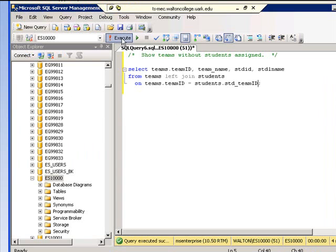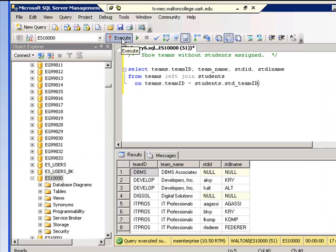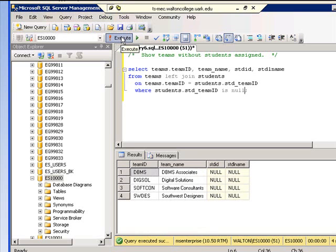So if I run this query before I've added the is null option, then I'm going to see all teams, even ones that don't have students. Now I run the query with the is null and I see only teams without students. So that's a very useful aspect of the one-sided outer join.